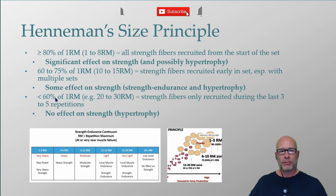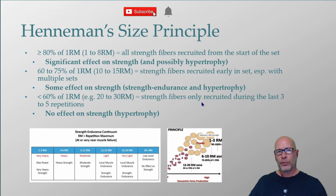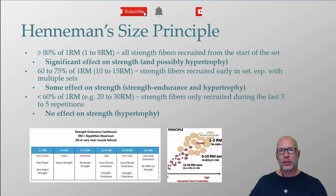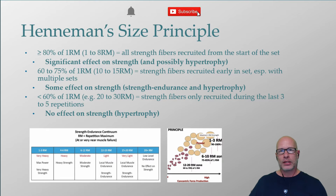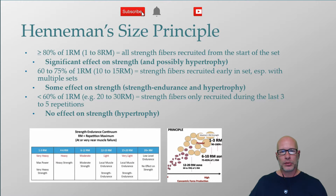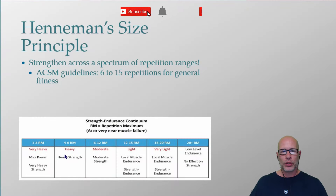But when you get beyond 15 repetitions — especially beyond 20, such as the 20-to-30 repetition range, where the load is below 60% of your one rep max — you don't recruit strength fibers until the last three to five repetitions of the set. For example, in a 25-repetition set, you aren't even recruiting the larger muscle fibers until the very end. Not only is the load not enough to train your strength fibers, but the time under tension isn't enough either. You won't have an effect on strength, but because you took yourself to or near muscle failure, you probably will still increase lean muscle tissue.